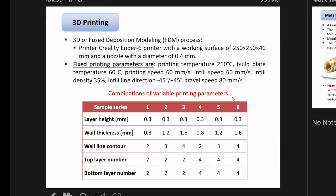Very important are variable printing parameters, which means we have different wall thickness, wall layer count, top layer number, and bottom layer number. The main and very important parameters in manufacturing are infill density and infill height or layer height.